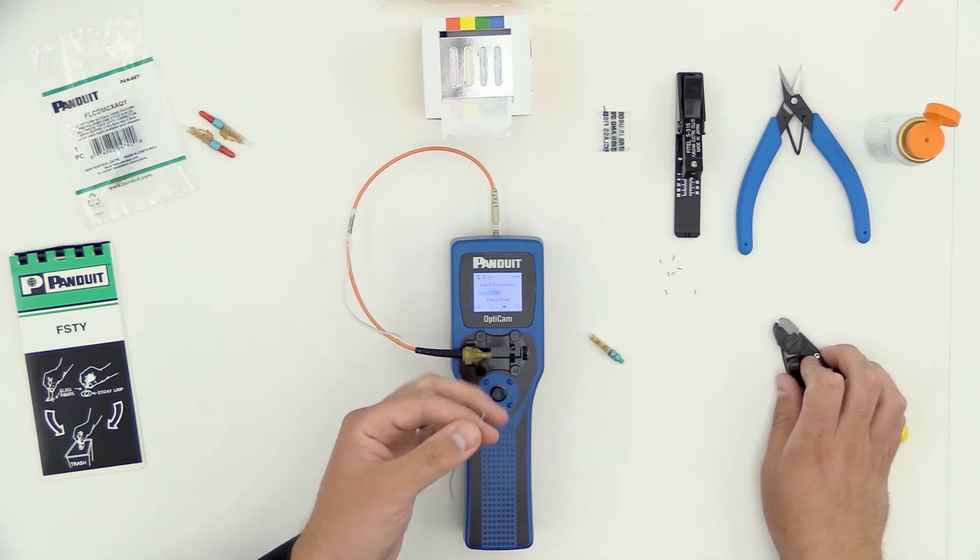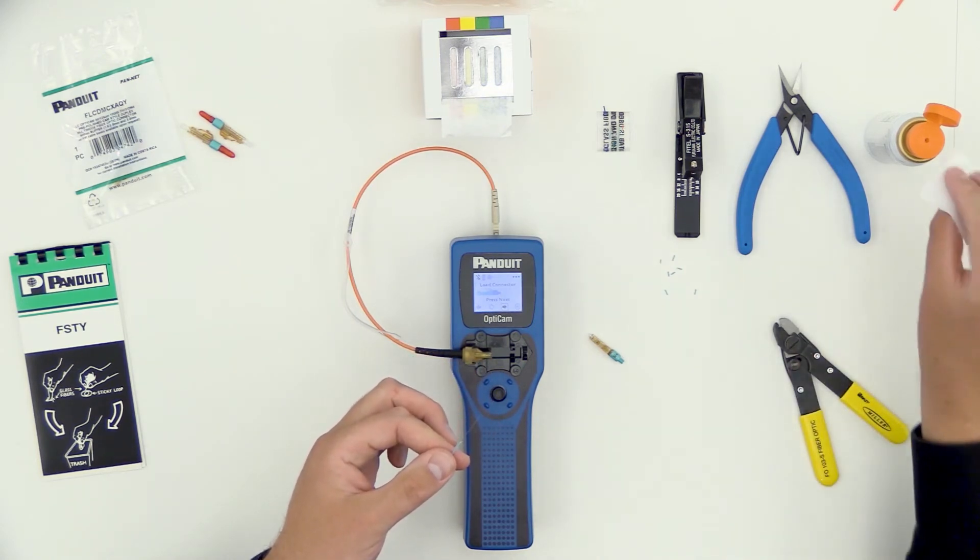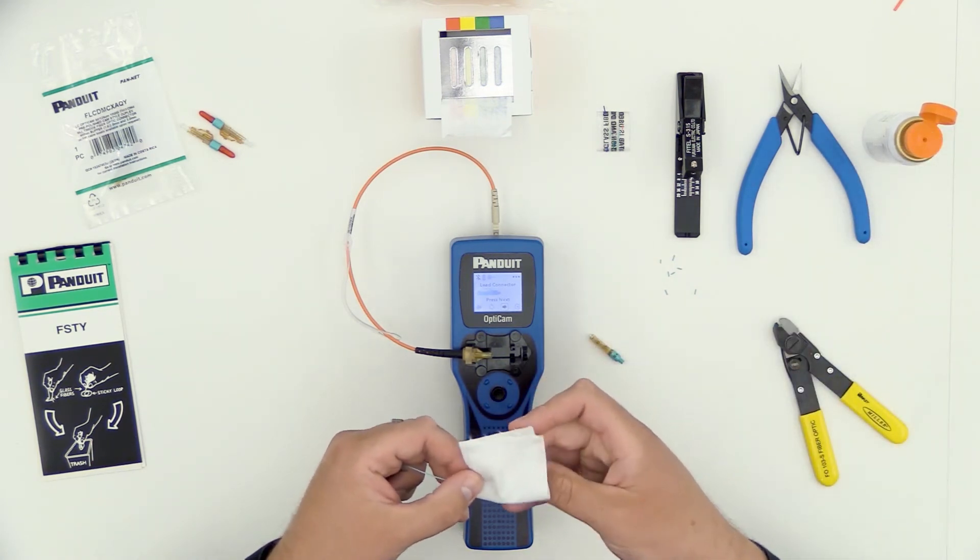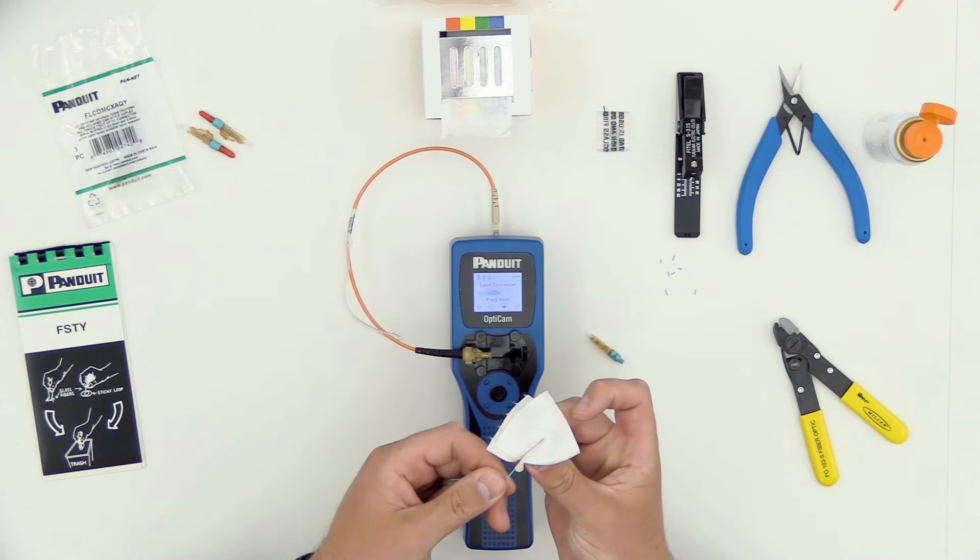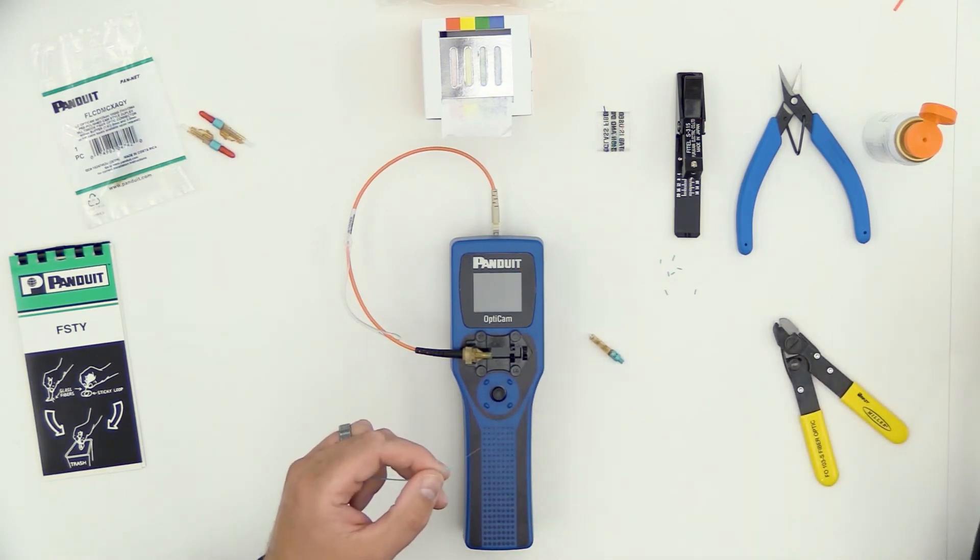Now that I've stripped off approximately how much I need, I again take a wipe, get it a little wet. This is where I'm going to clean off the acrylene and any debris that's left on the fiber itself. Take two pulls, it should be clean.